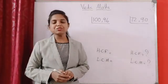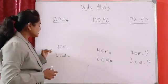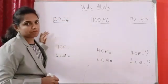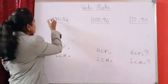Hi students, welcome to RP class. Now, using Vedic math, how to find HCF and LCM of any two numbers? Let's see the first problem, 30 and 54. First, start with 2.